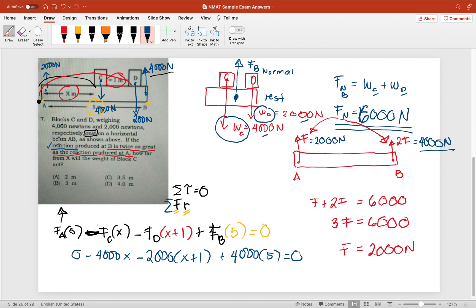So let's solve this. This will be negative 4,000x minus 2,000x minus 2,000.